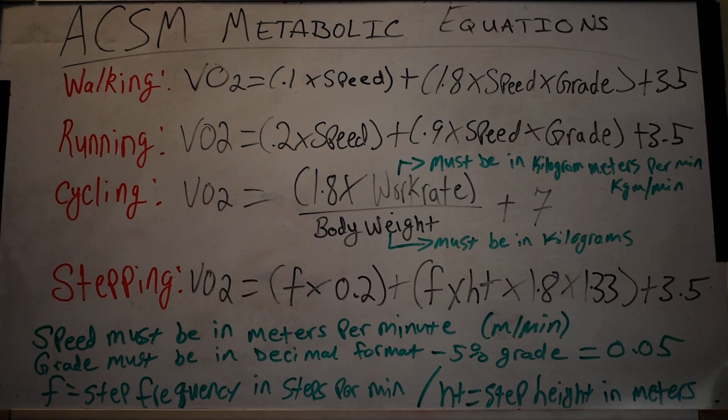The metabolic equations we use them for calculating VO2 at a given exercise intensity, or we can manipulate the equations—that is to say, if we want to exercise at a certain VO2 at a certain speed on the treadmill, what grade we need to be at. We can do that as well.